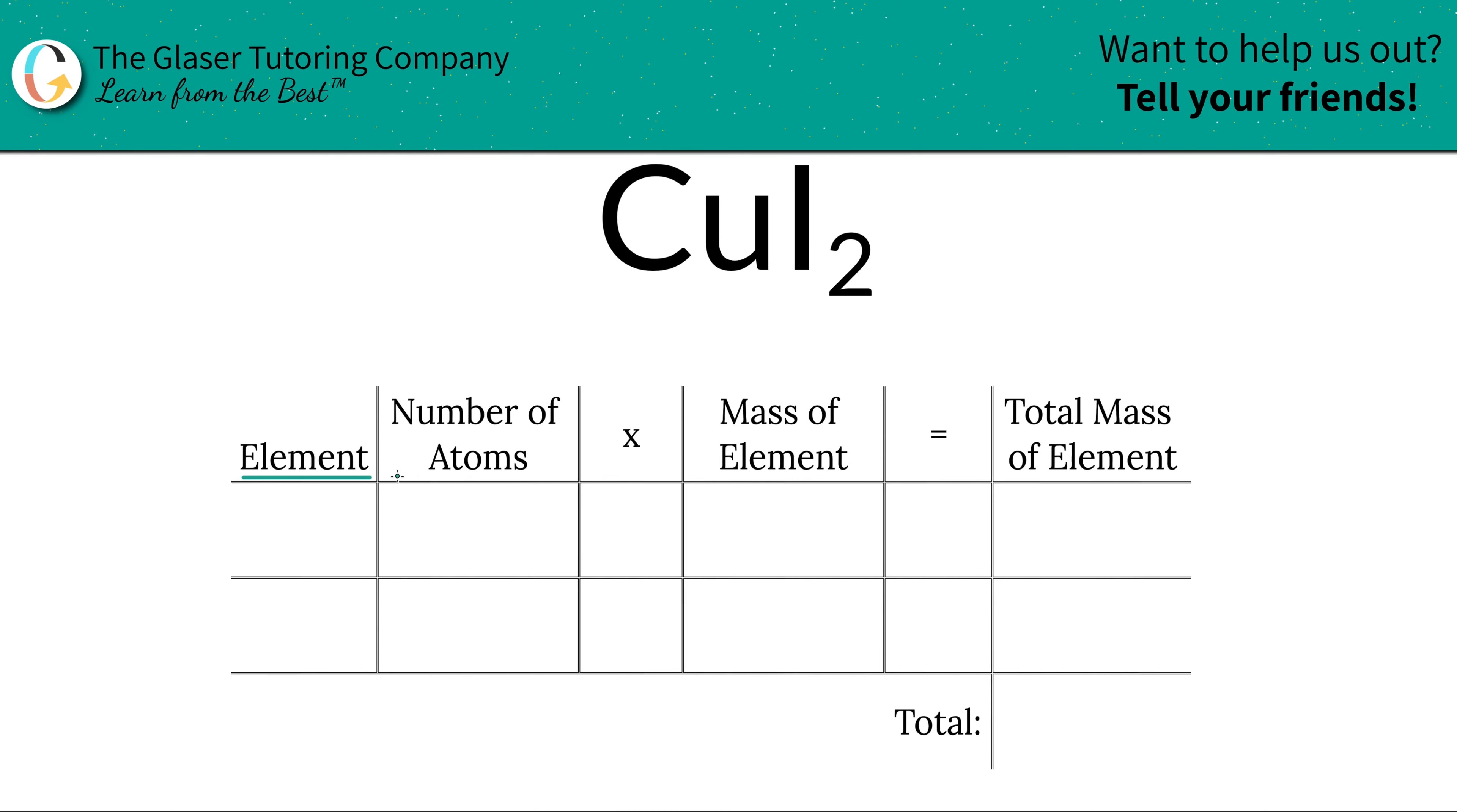So the first thing I'm going to do is write down the elements I see in the compound. So we see copper, Cu, and we see iodine, I.